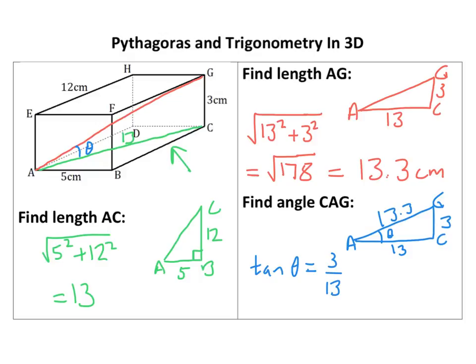So theta equals inverse tan, or tan to the minus one. Theta equals tan to the minus one of three thirteenths, and that's what I'm going to put into my calculator.